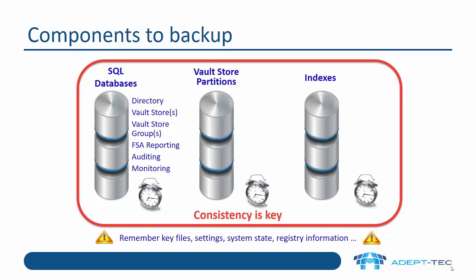We also need to back up our Vault Store partitions, which are really just files and folders that contain the archived items. And we also need to back up our indexes — once again, these are folders and files that contain the full-text indexes. Also important: remember to back up other key files and settings — the system state, the registry, license files, and so on.